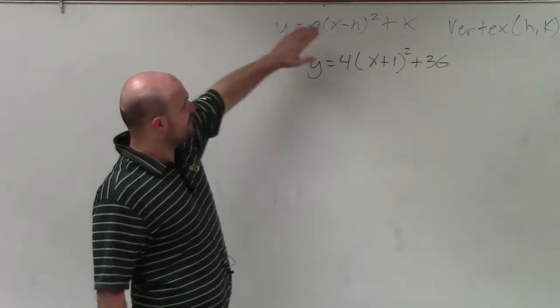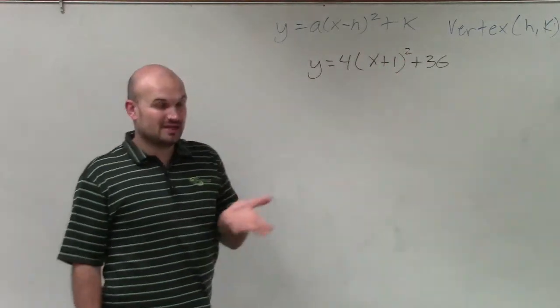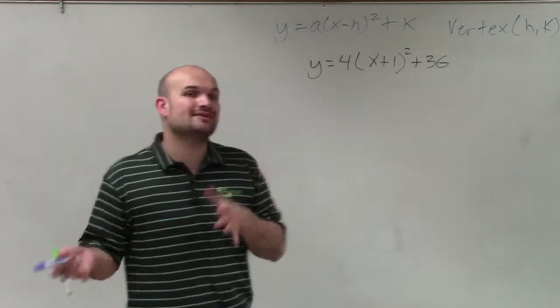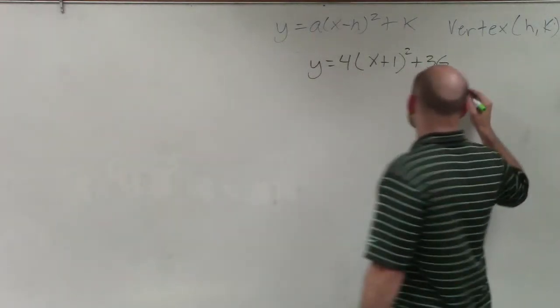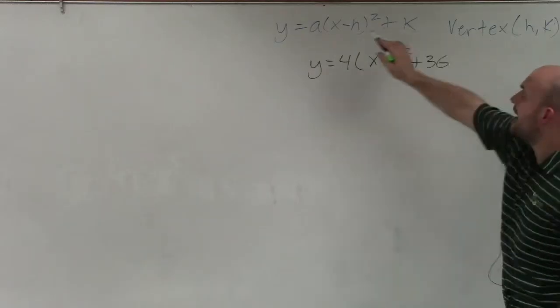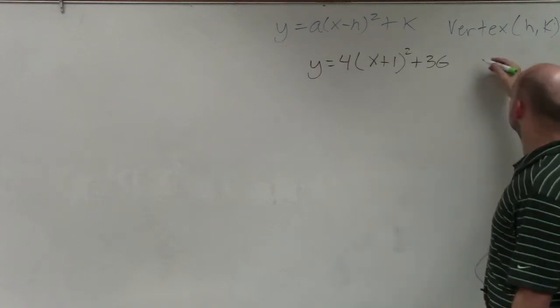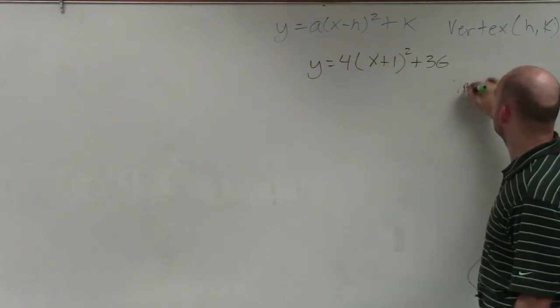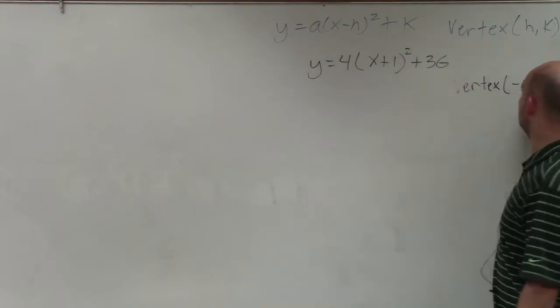So I wrote the standard form of vertex form as well as what the vertex equals. And you can see that this equation is in vertex form. So to be able to identify the vertex is fairly simple. In this case, I can see that it's x opposite of h. So here I have x plus 1, so the opposite of 1 is going to be negative 1. So I'll just write vertex is negative 1, and then k, which would be 36.